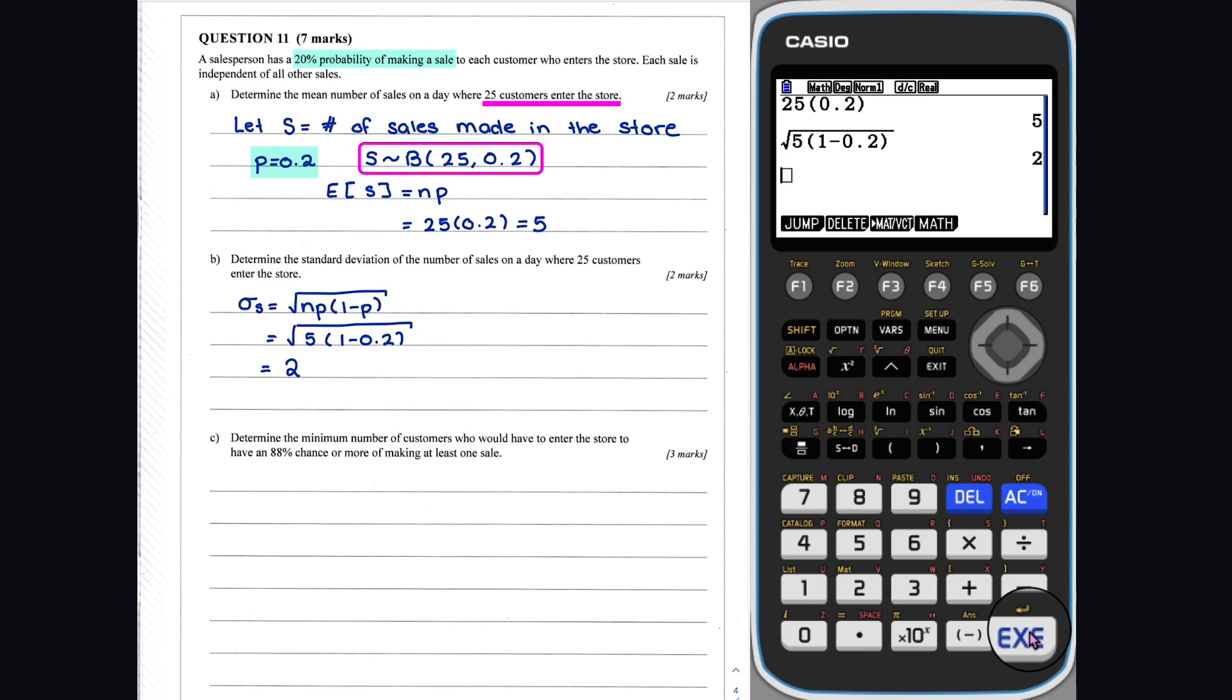Question 11 Part C: We want to determine the number of customers such that the probability of making at least one sale is 88%. Let's first define Sn to be the number of sales when n customers enter the store. Sn is again binomial with the number of trials equal to n and the probability of success 0.2.